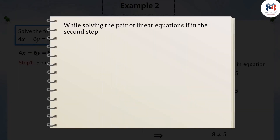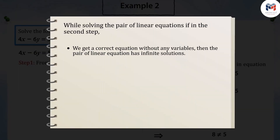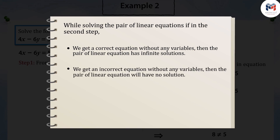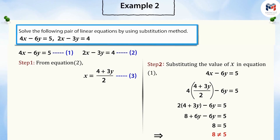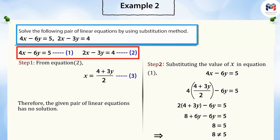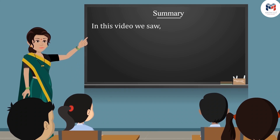While solving a pair of linear equations in step two, if we get a correct equation without any variable, then there will be infinite solutions. If we get an incorrect equation without any variable, then there will be no solution. Because in this example we got an incorrect equation without any variable, the pair of equations does not have any solution.